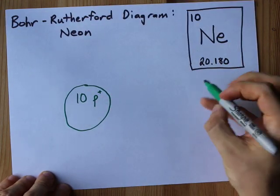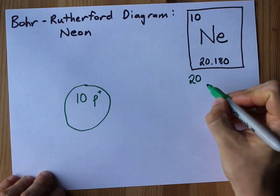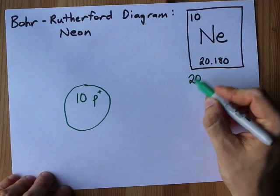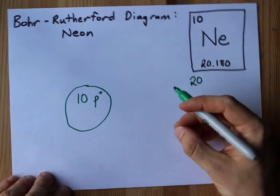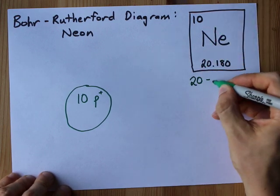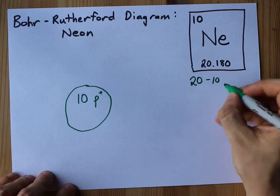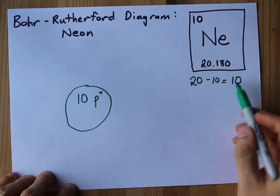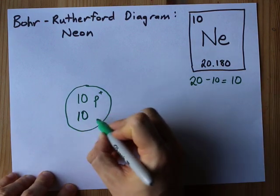Now the mass number 20, about 20 here, is the number of protons plus neutrons. So if I want just neutrons, I have to take that number and subtract the number of protons. That's still going to give me 10, but the fact that these numbers are the same is a coincidence.